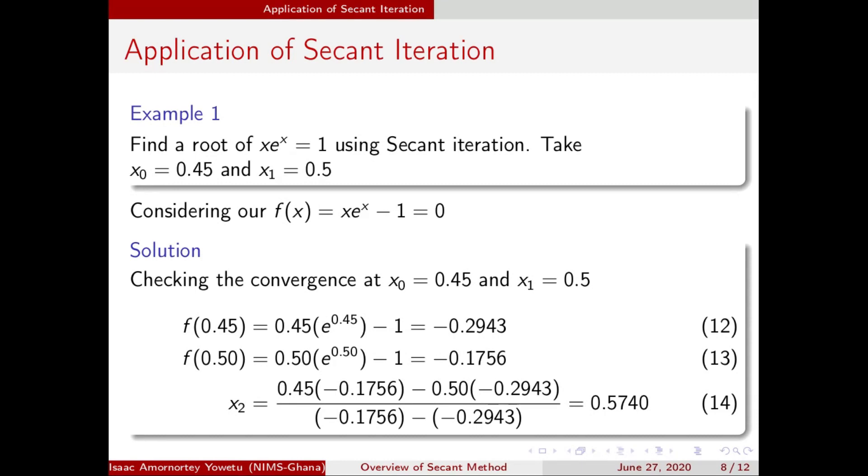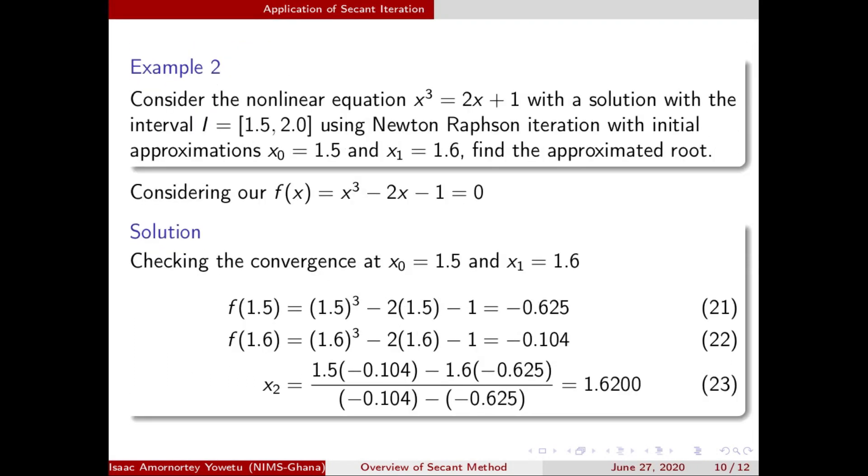I want to look at example two. We consider a nonlinear equation of this form. We were told that our root lies within this interval. We have to be given initial guesses. Assuming you are not given, you can guess it yourself by taking two successive terms from this. With these initial guesses, we are asked to find the root. We rewrite the function, and taking x0 and x1, we find their respective functional values. We plug them into the Secant method, which gives us x2.